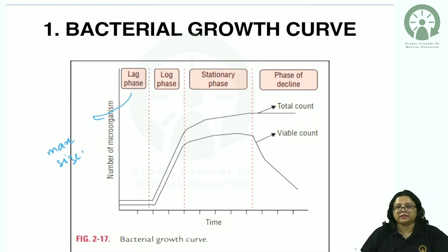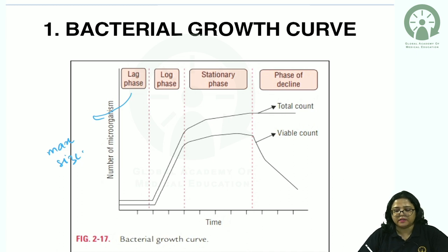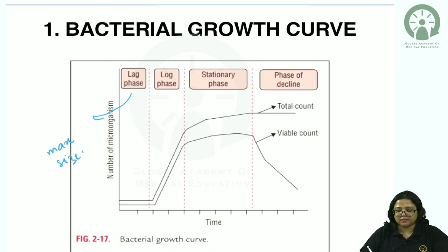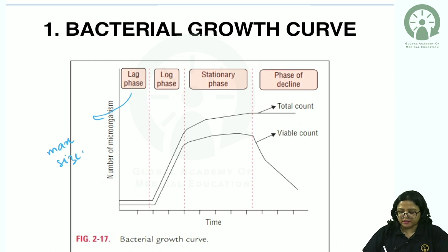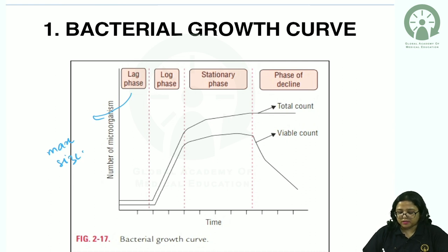In the log phase, the bacteria divide by binary fission, causing the count to move upward. There is an increase in total count as bacteria actively multiply and produce daughter cells. In the stationary phase, metabolites are exhausted, so some bacterial cells die. The viable count — referring to living bacteria — starts decreasing, while total count includes both live and dead bacteria.